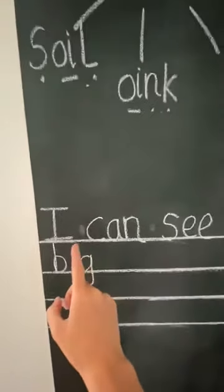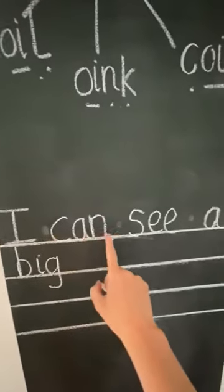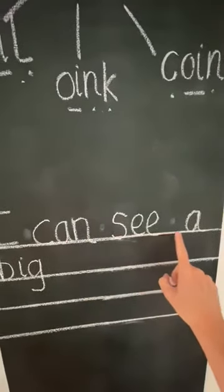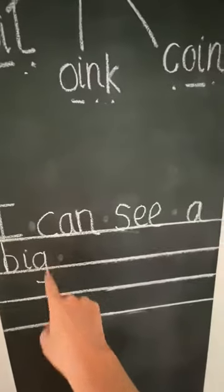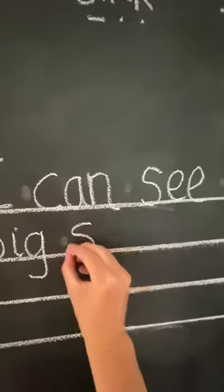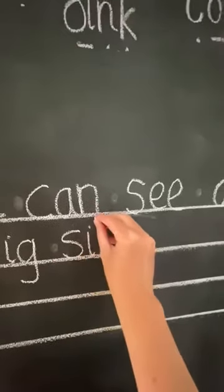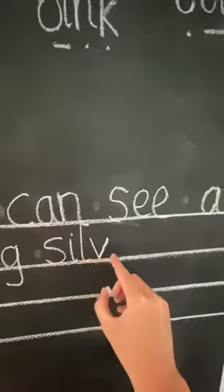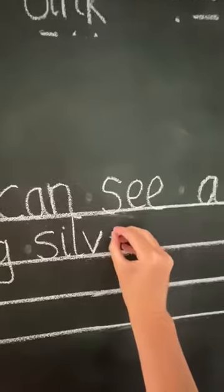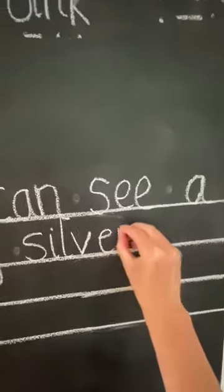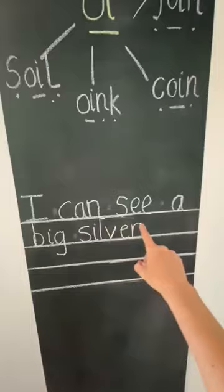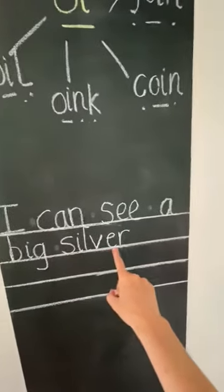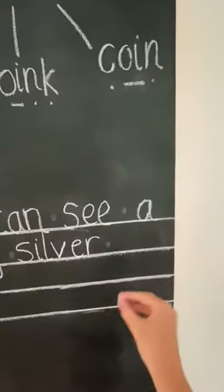Let's just read what we've written — check we've not missed anything. I can see a big silver. Silver. I can see a big silver coin. So we're using today's digraph OI in coin.